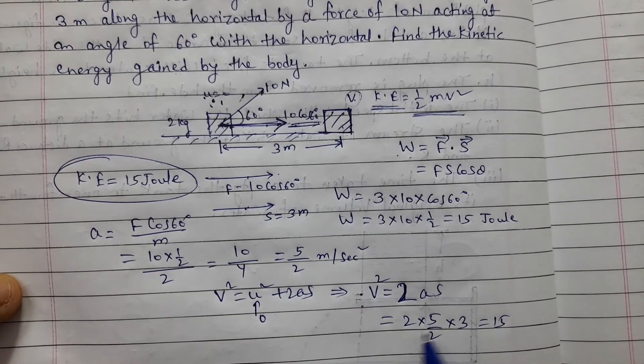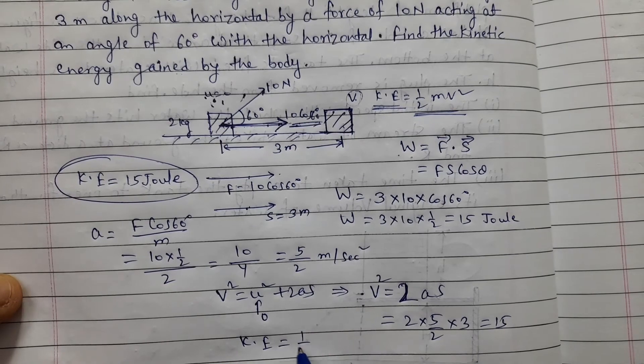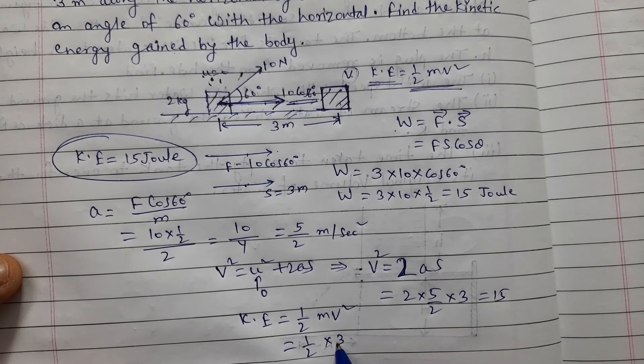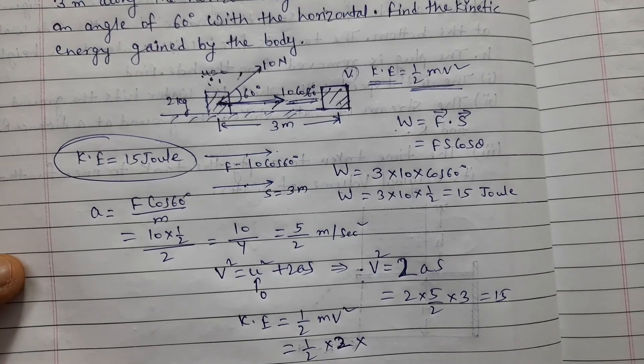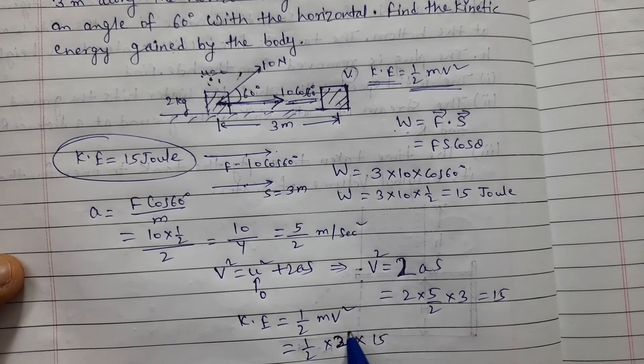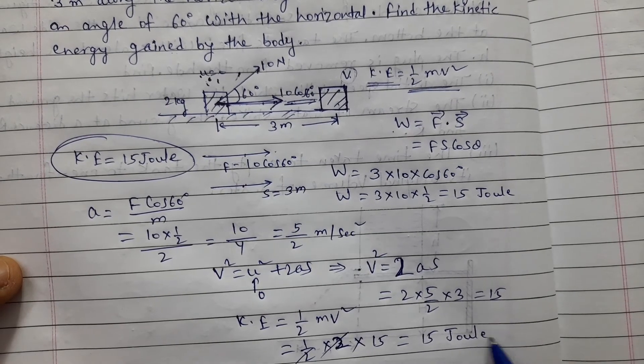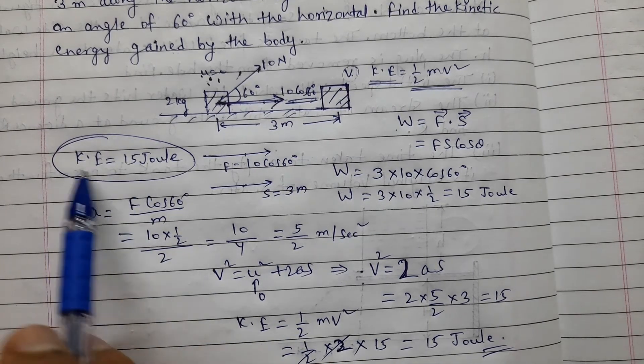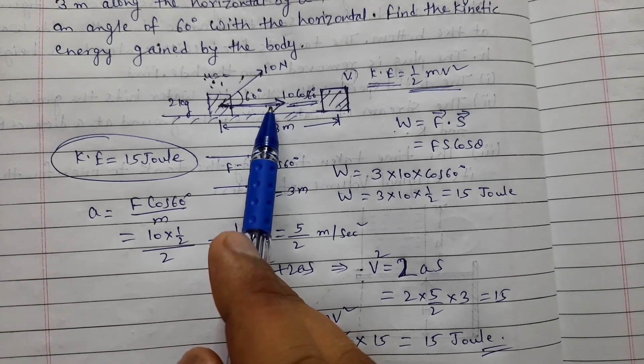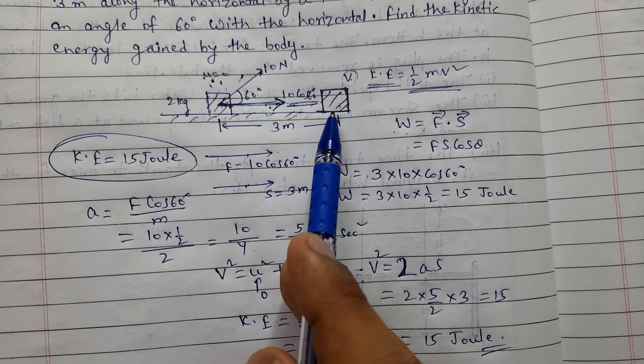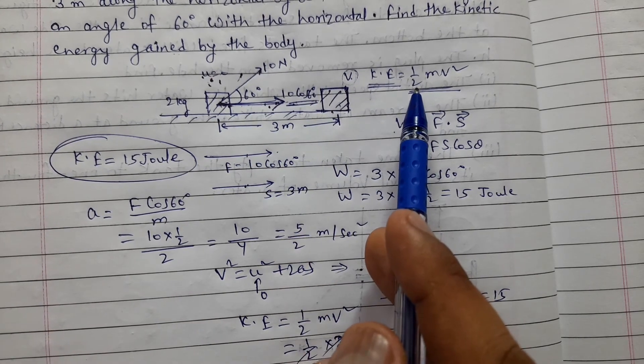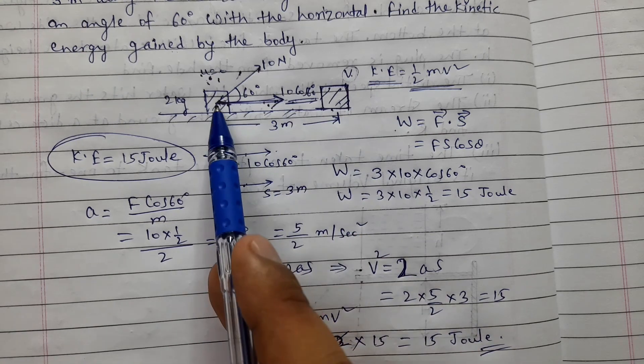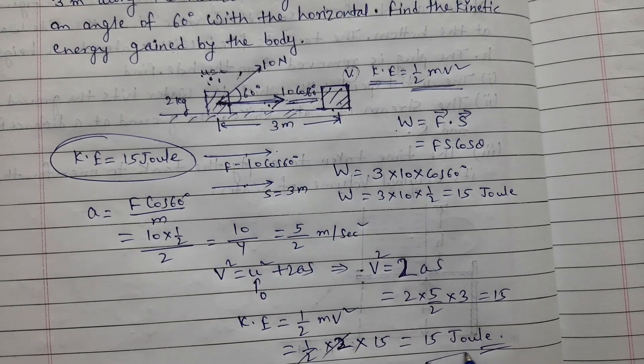Now kinetic energy is half M V squared. Half, mass value is 2 kg, into V squared, so V squared is 15. That is dependent upon the velocity. This is how much work will convert to kinetic energy because there is no energy loss. So, 15 joules answer.